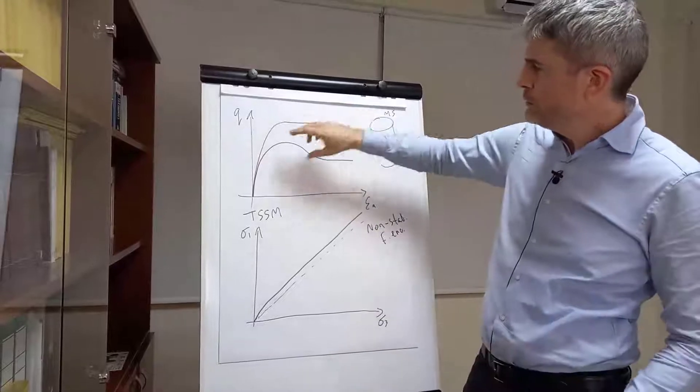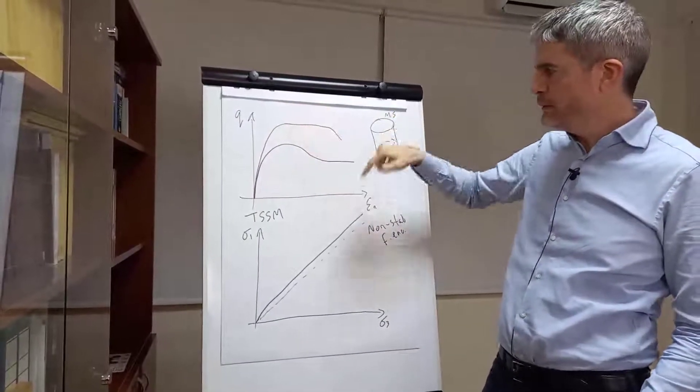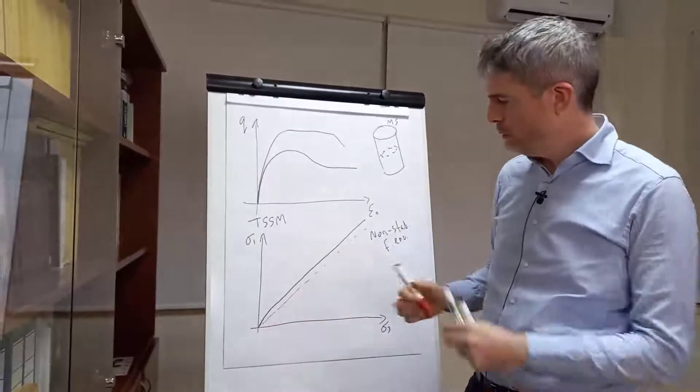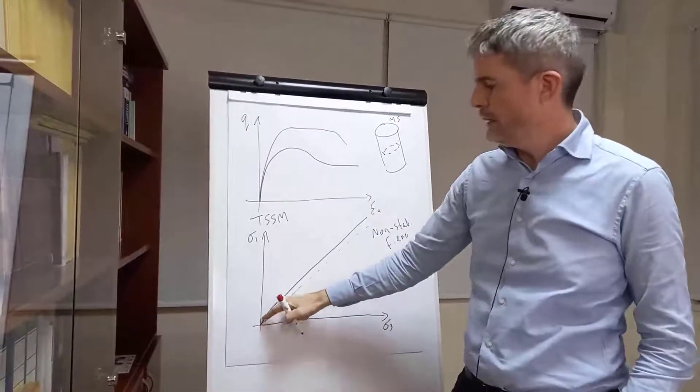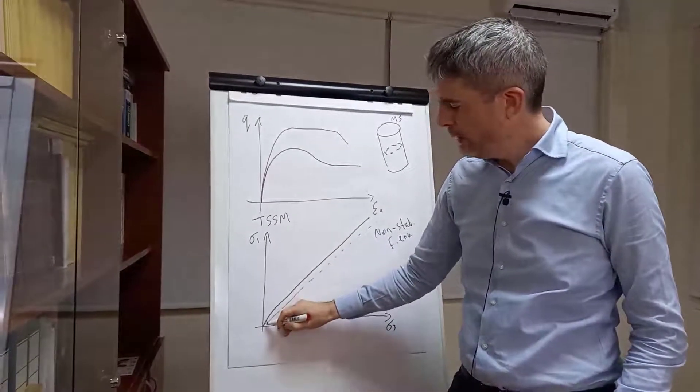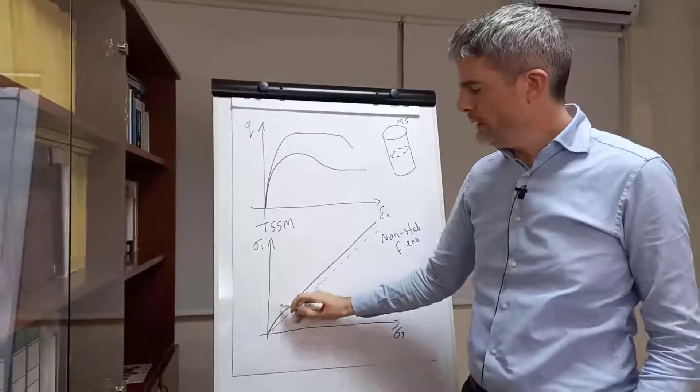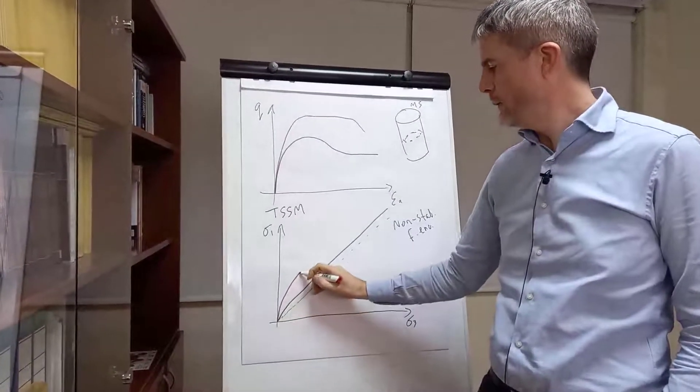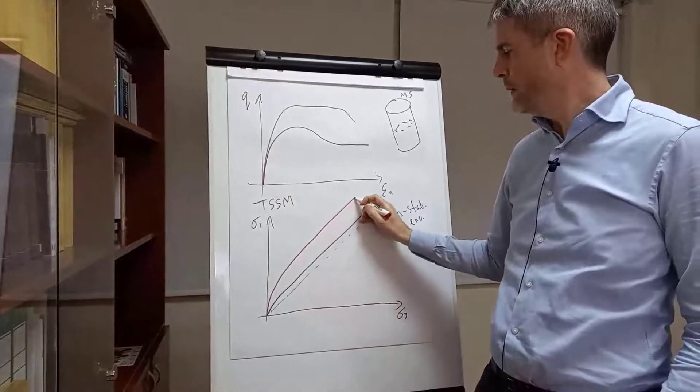But when we do tests on a mechanically stabilized aggregate at different confining stresses, we can see the additional strength that we get, and that actually looks like a much more non-linear envelope, much more curved, and we get something like that.